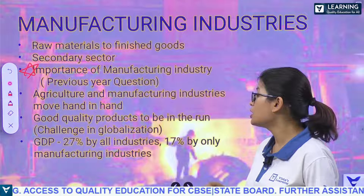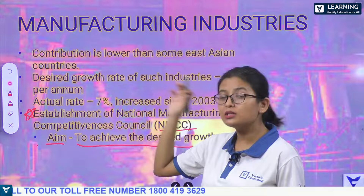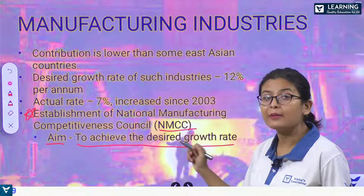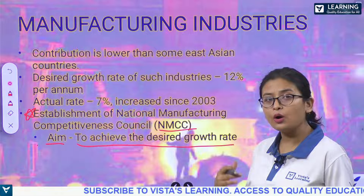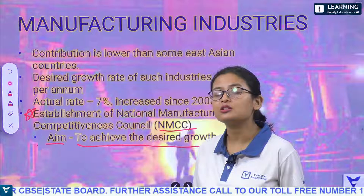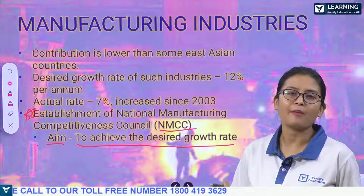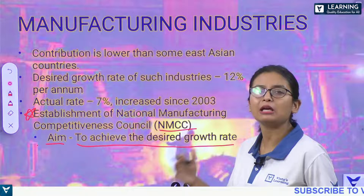You can write about how agriculture and manufacturing industries run parallelly for their growth. We can talk about the growth of manufacturing industries mentioning GDP — 17% contribution, the desired rate of 12%, the actual rate, and the aim of NMCC (National Manufacturing Competitiveness Council). Small questions can be framed even from the introduction. In this session, we are only going to solve previous year question papers.